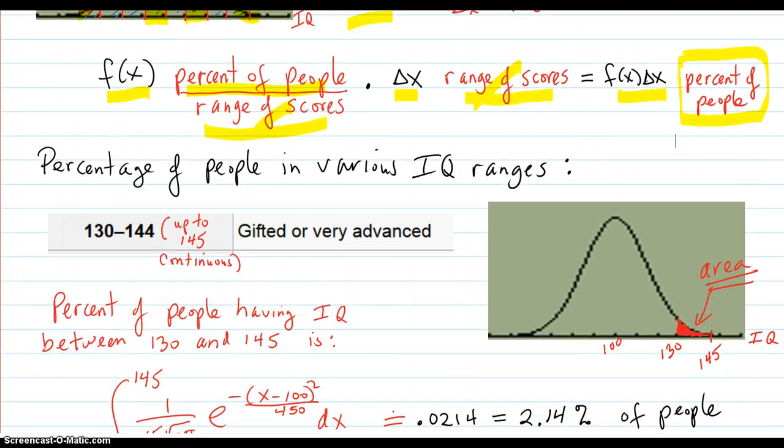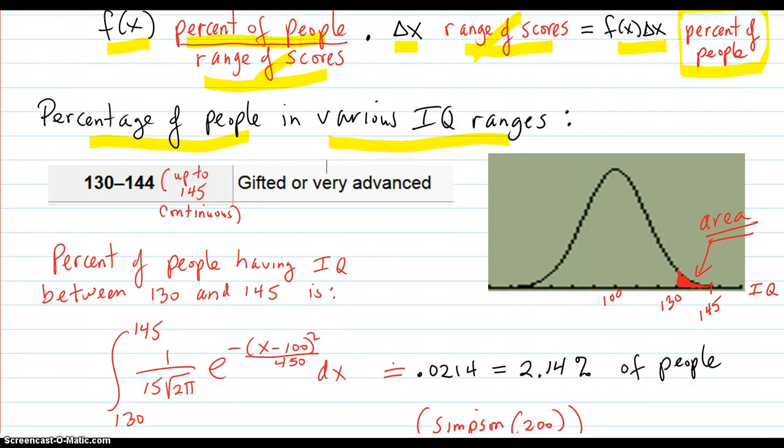So let's find the percentage of people in the various IQ ranges. Copying from that chart above, the people from 130 to 144, and we're going to go all the way to 145 because on our graph the function is continuous smooth and doesn't end just at integer values. It goes all the way up to the 145. So 130 to 145 is the gifted or very advanced category. And we want to find out how many people are in there, the percentage.